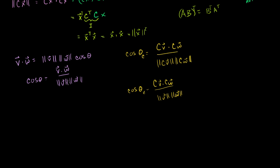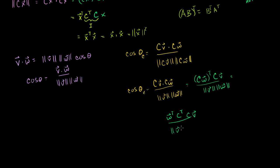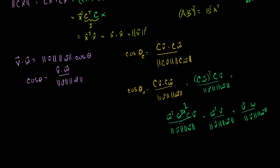For the numerator, using the dot-product-as-matrix-product property, Cv dot Cw equals Cw transpose times Cv. We can then expand this as w transpose times C transpose times Cv. Since C is orthogonal, C transpose times C is the identity matrix, which disappears. This gives us w transpose times v over the product of their lengths, which is exactly v dot w over their lengths — which equals cosine of theta, the original angle.